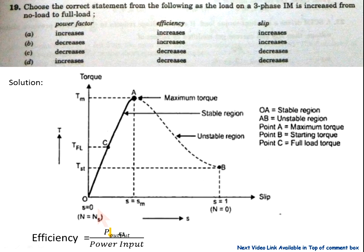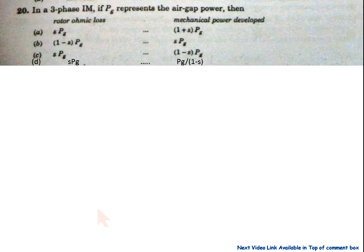Efficiency equals power output divided by power input. When loaded from no load to full load, the rotor current I2 comes into the picture. Power output is related to I2² × R2 / s (air gap power), and mechanical output power is (1 - s) × Pg. As load increases, power output increases, so efficiency also increases. Option A is correct.